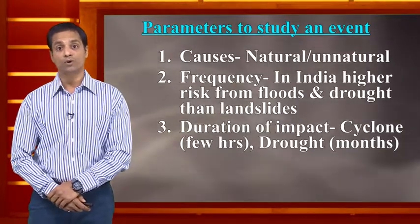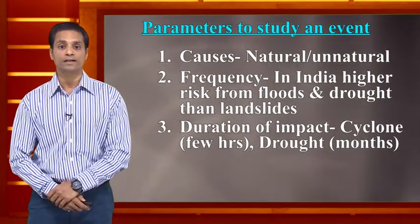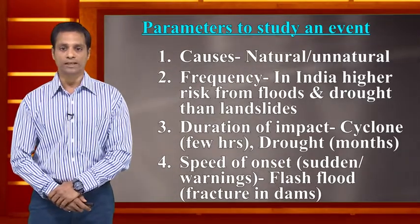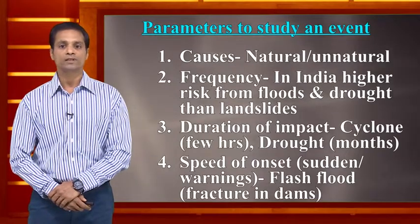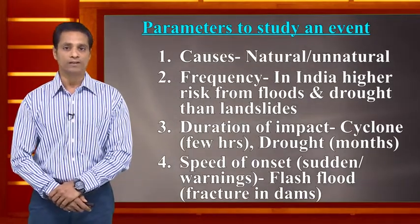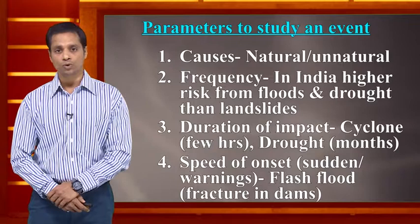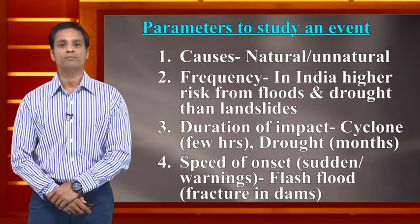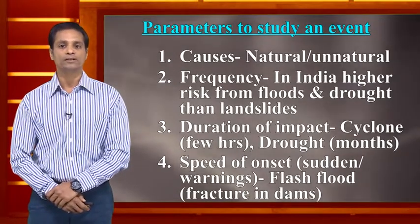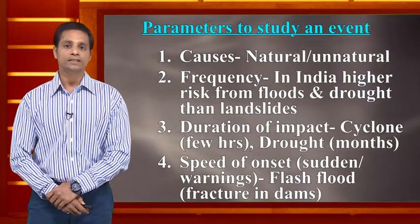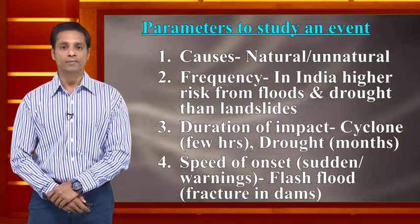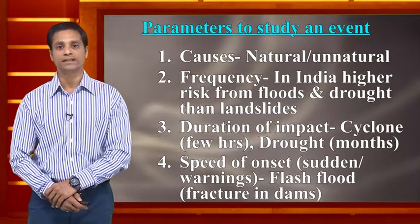The fourth parameter is the speed of onset — can a warning be issued for a specific disaster? The impact can be sudden or slow-moving, which can be assessed by the meteorological department. For example, flash flooding can cause the sudden impact of fracturing existing dams.